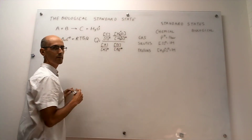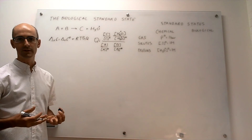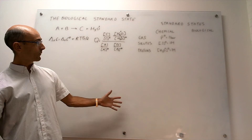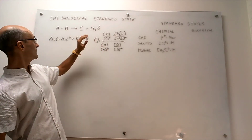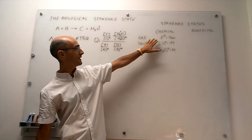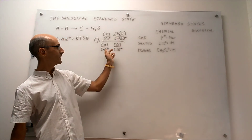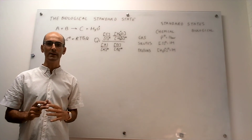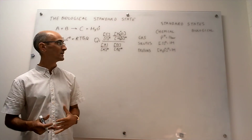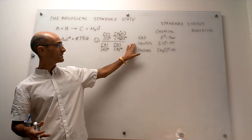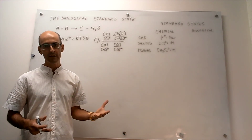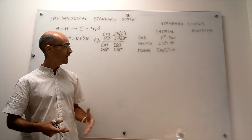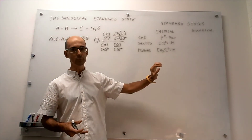If we recall how we define the chemical standard state: if any of these species is a gas, then the denominators would be a standard pressure of one bar — this is completely arbitrary and by convention. If you have solutes, then those concentrations will be one molar. Protons are generally considered to be a solute as well, so the reference concentration for protons would be one molar.